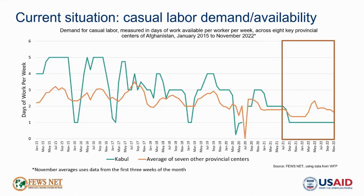This reduced demand for labor has been significantly impacting income earning for households dependent on this source, particularly in urban areas. On the other hand, there are two key income sources expected to be providing poor households with notably more income than usual: income from cash crop production including poppy, due to increased cultivation and rising prices following the Taliban takeover; and income from foreign remittances, which are expected to be above average given high levels of need. However, we expect these increases likely do not exceed increased expenditure needs for households overall.